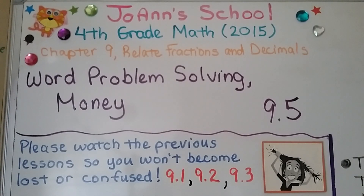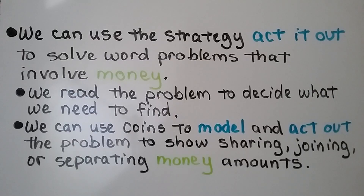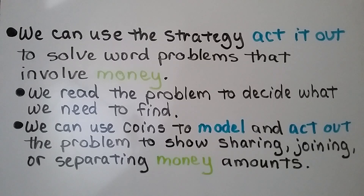Lesson 9.5: Word Problem Solving with Money. We can use the strategy of acting it out to solve word problems that involve money. We read the problem to decide what we need to find. We can use coins to model and act out the problem to show sharing, joining, or separating money amounts.